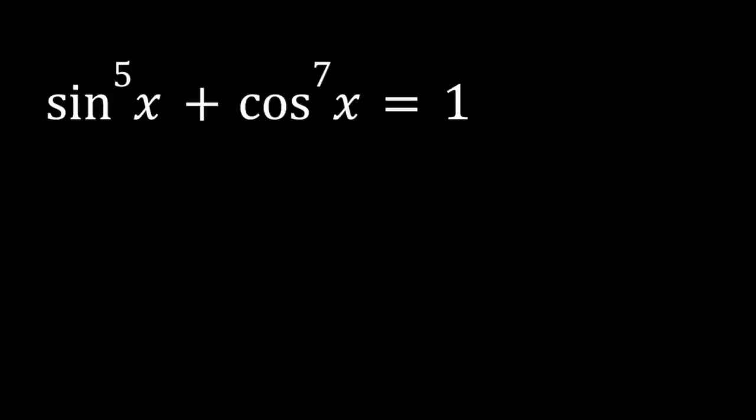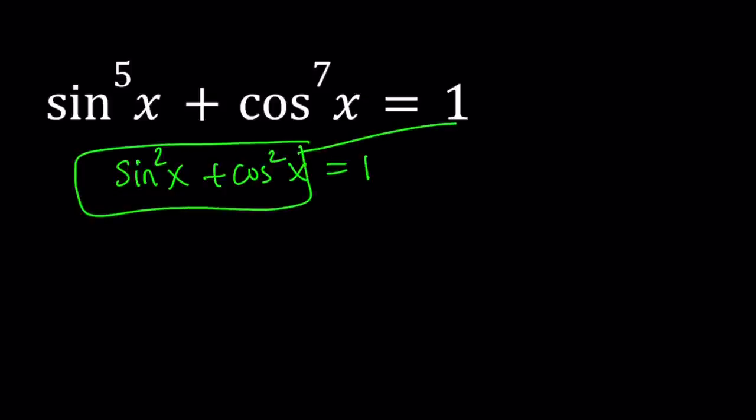First of all, let's use a well-known identity. What is the most important identity in trigonometry? I think a lot of people will agree that it is sine squared x plus cosine squared x equals one. How can we use this? We have odd powers of sine and cosine on the left-hand side, but we have one on the right-hand side. So we can replace this one with this, and that's going to help us a lot.